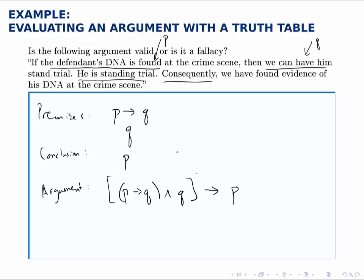You should be able to tell this is an invalid argument just by reading through it. But now we're going to prove that with the truth table, where we have P implies Q and Q as our premises, and P as our conclusion.